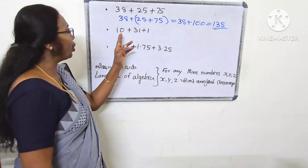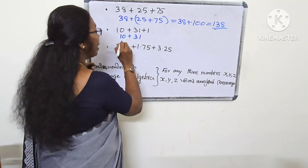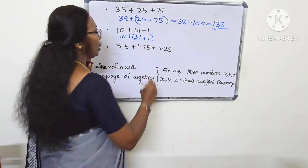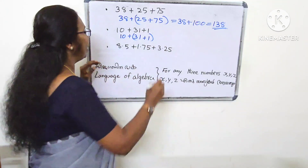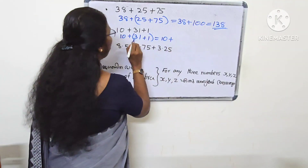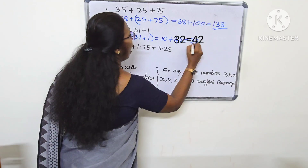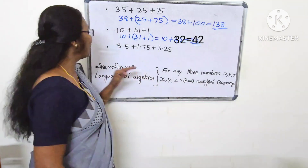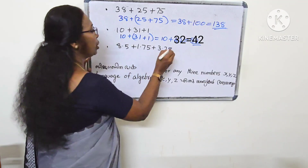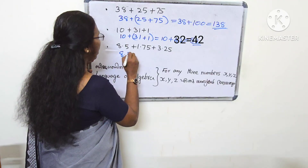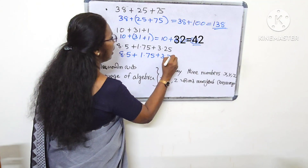The next example is 10 plus 30 plus 30 plus 1. We can add two numbers. You can add two numbers here. How do we do that? Here, 8.5 plus 1.75 plus 3.25. That is 8.5 plus 1.7 plus 1.7 plus 3.25.